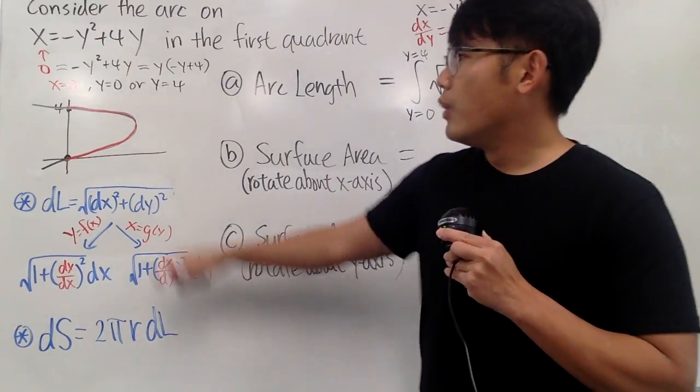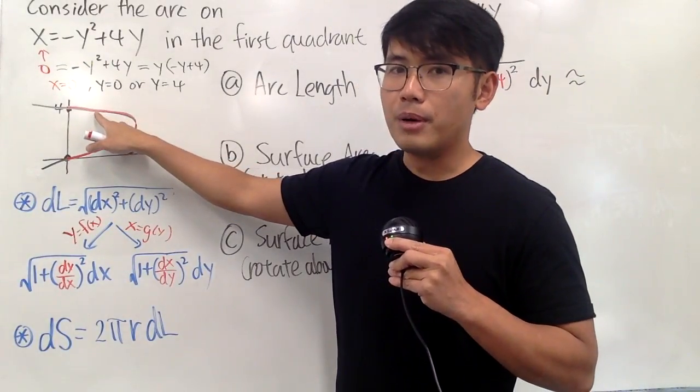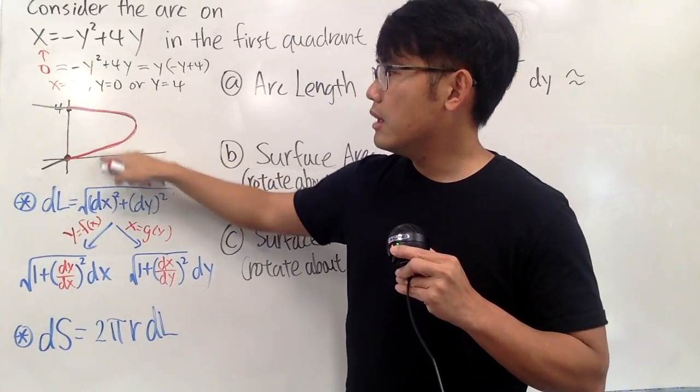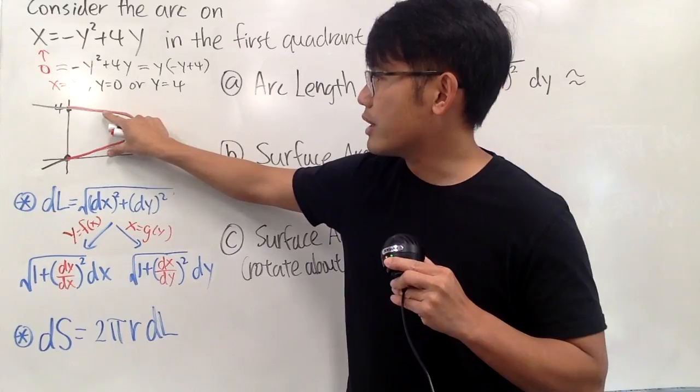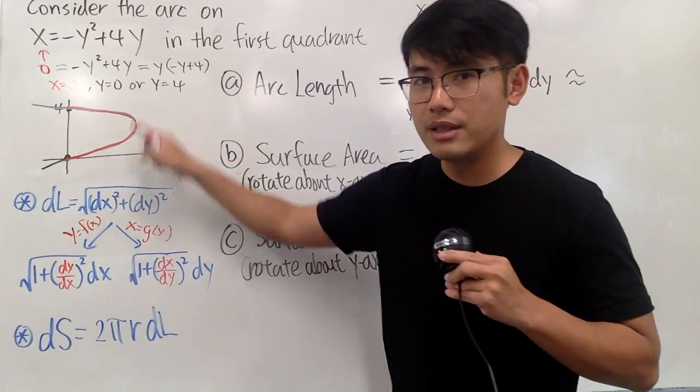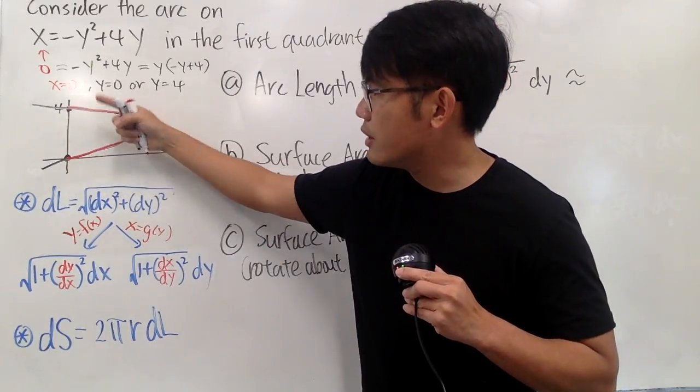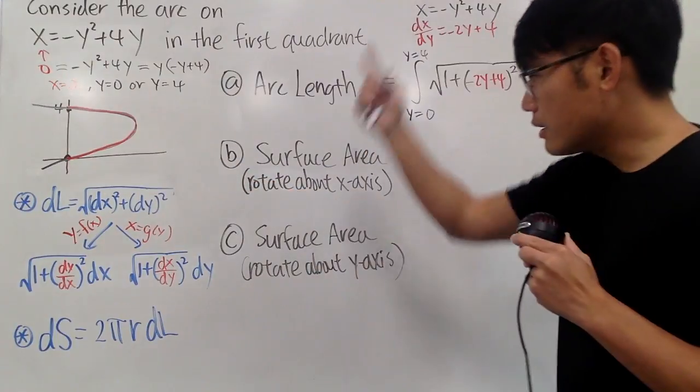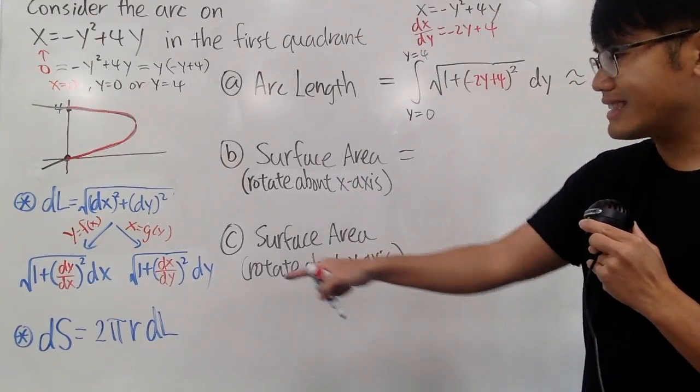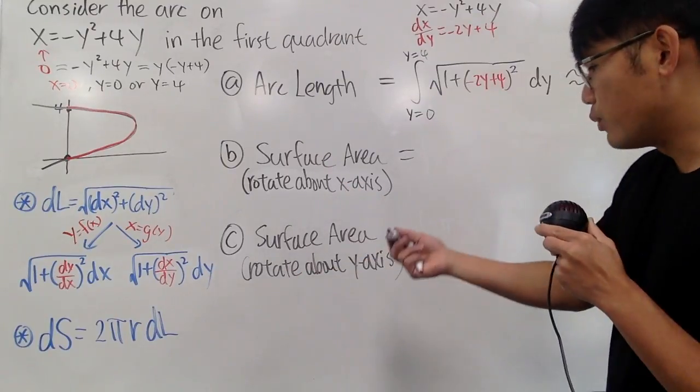Well, if you have a point right here, for example, the radius is just going to be the y value, because it's vertical. This right here is the y value, because you are rotating about the x-axis, so it's going like this, right? Take this, and then rotate, you get the whole thing. So, when you rotate about the x-axis, the radius is y, and we just put that down.